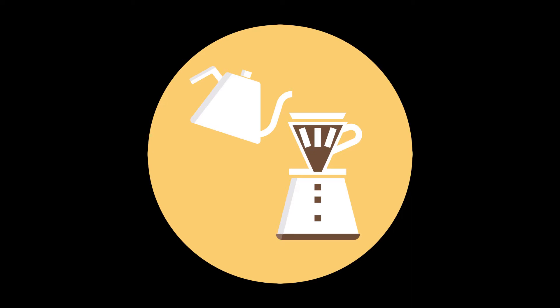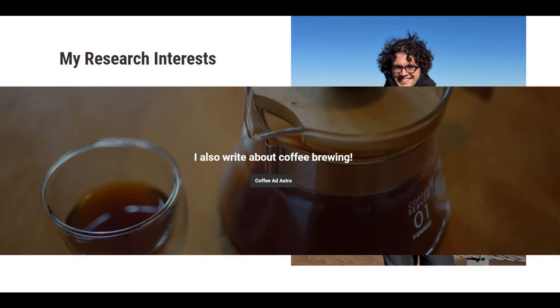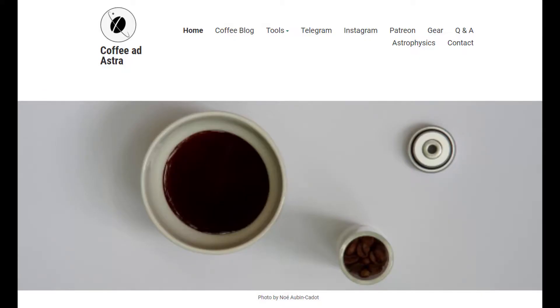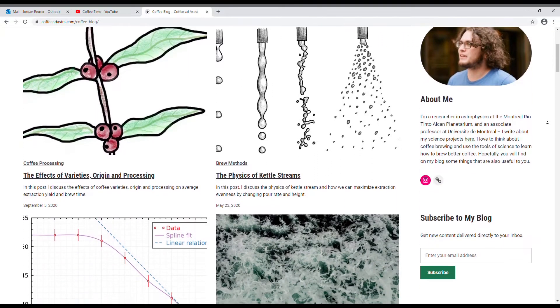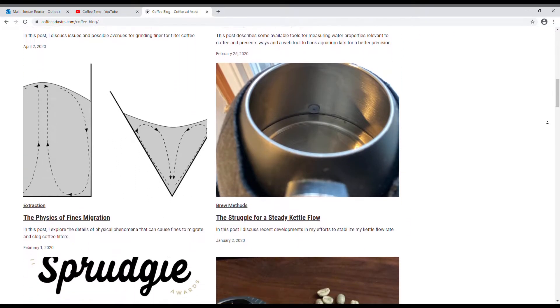One quick thing before we dive in, I want to say that my technique is heavily influenced by the work of Jonathan Gagne. He is an astrophysicist who also has a passion for coffee and writes a coffee blog called Coffee at Astra, which I'll link in the description below. A lot of the science and techniques that I use are from him and I recommend that you go check out his work.